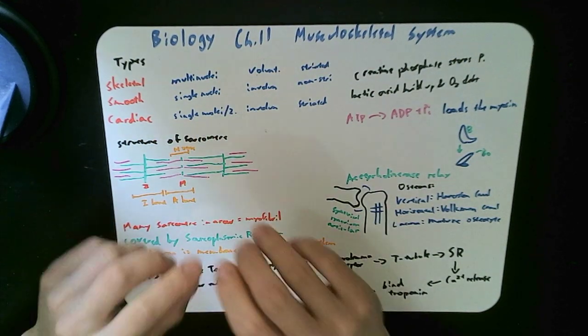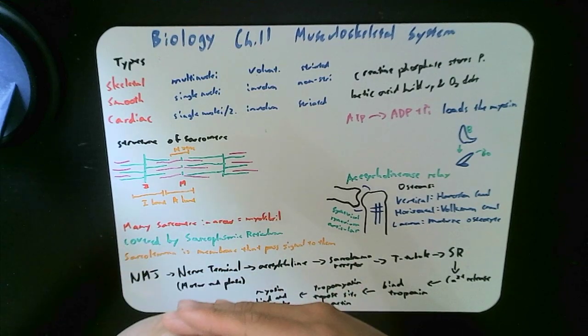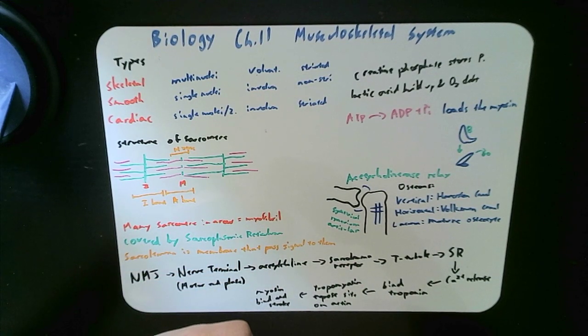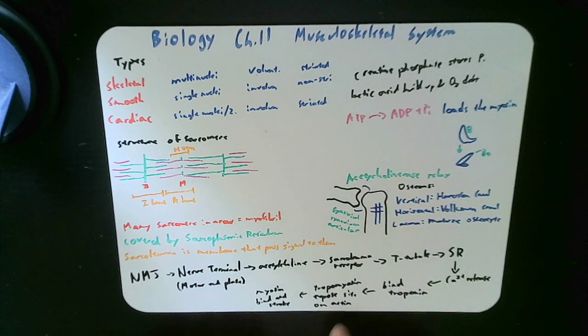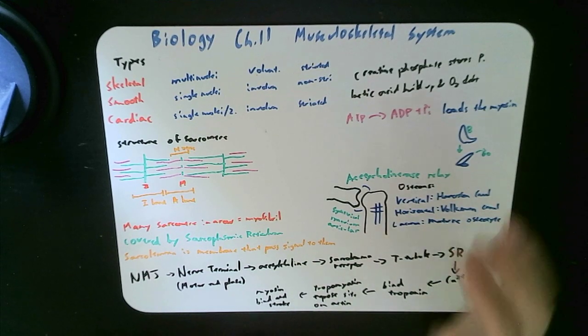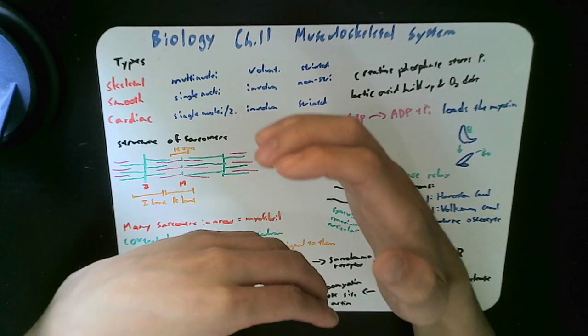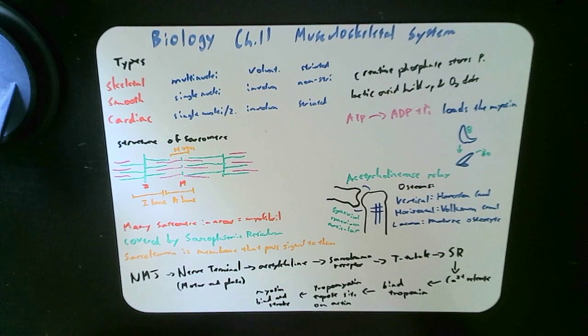That's how you remember the troponin and tropomyosin are associated with actin because it has a T in it. But the actin sites available for myosin exposure, myosin attachment, are exposed now. And then myosin can finally use this little hand to grab on and stroke and pull them together.